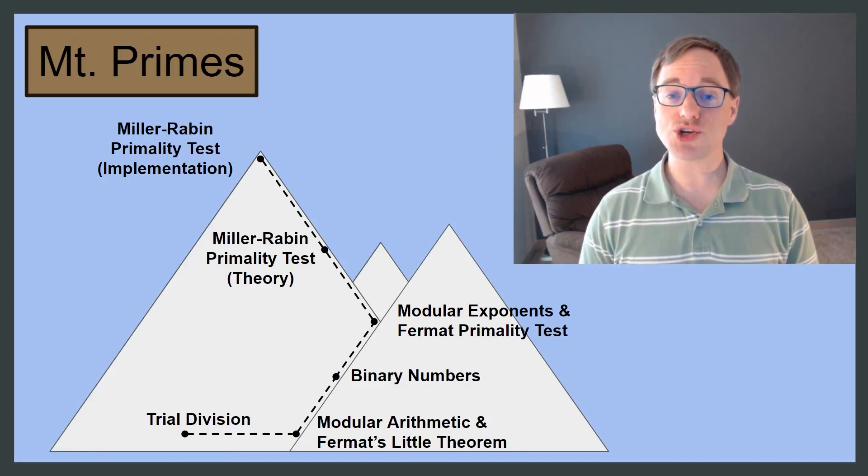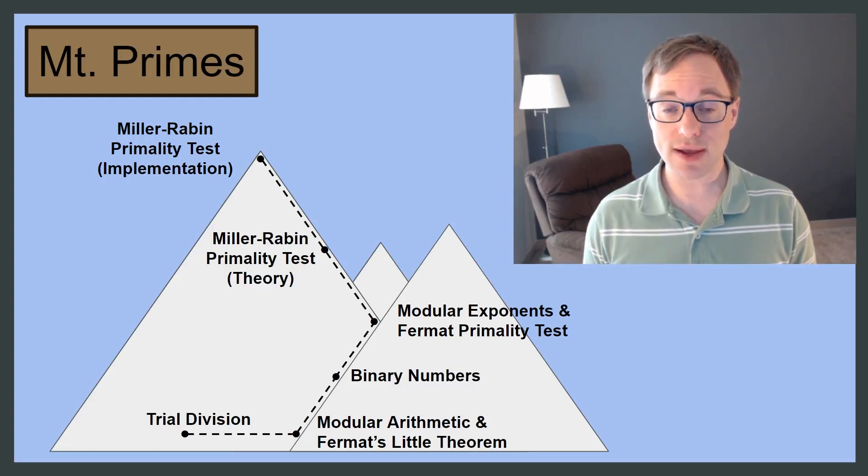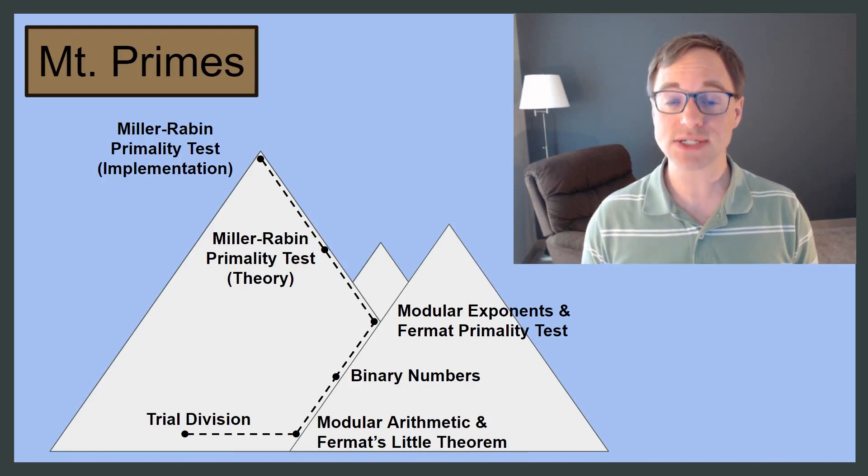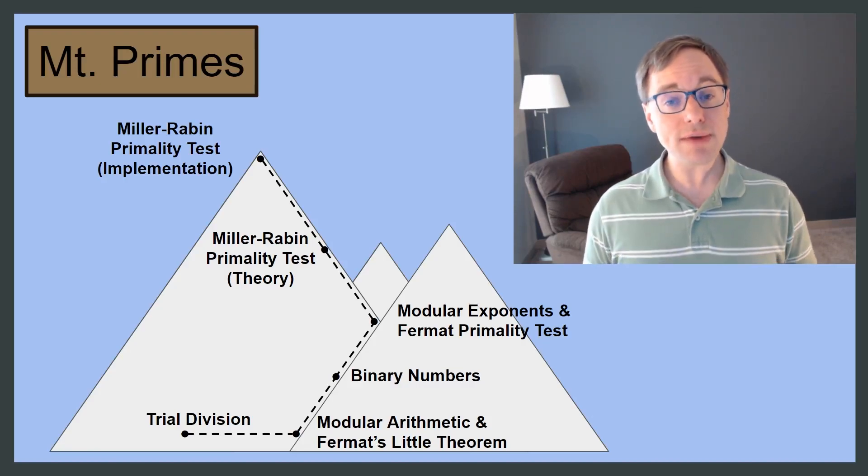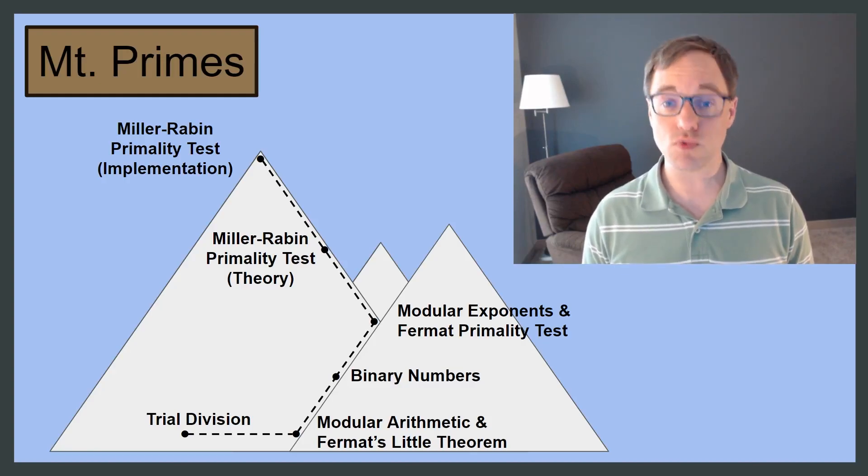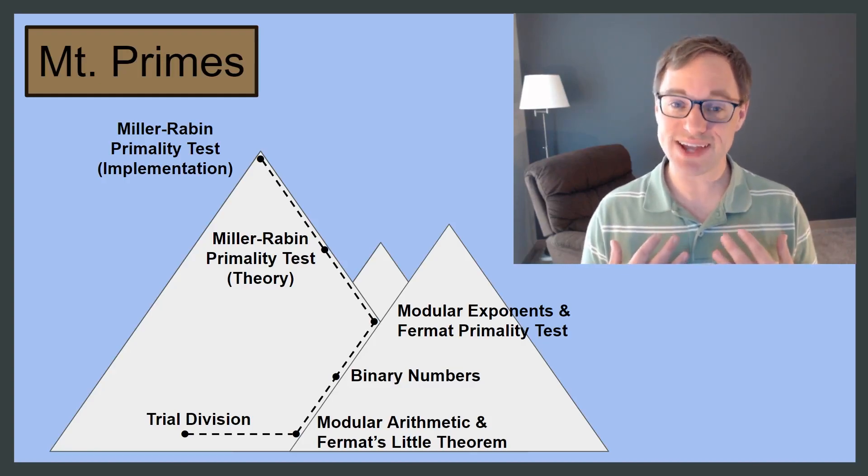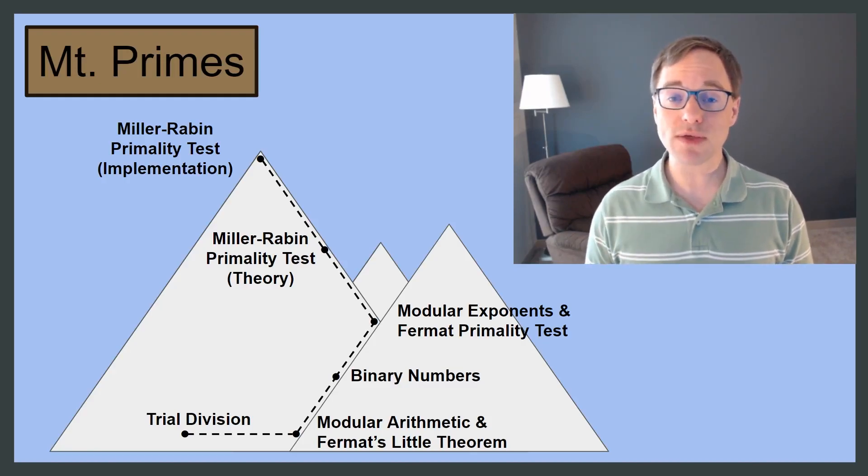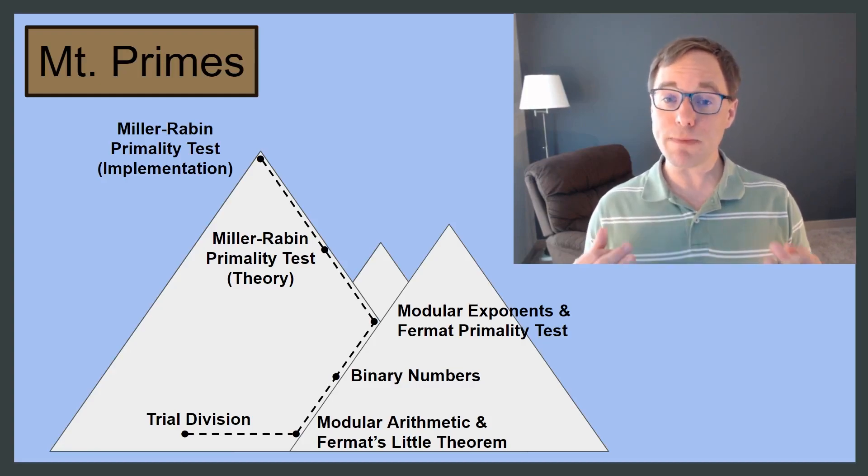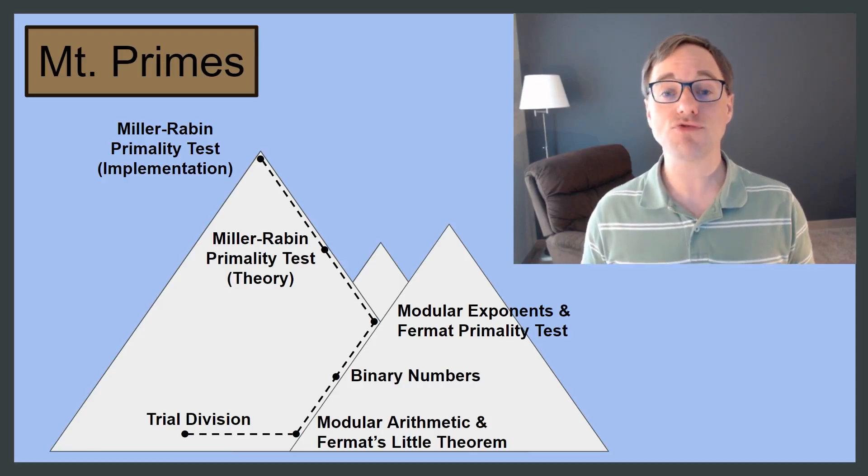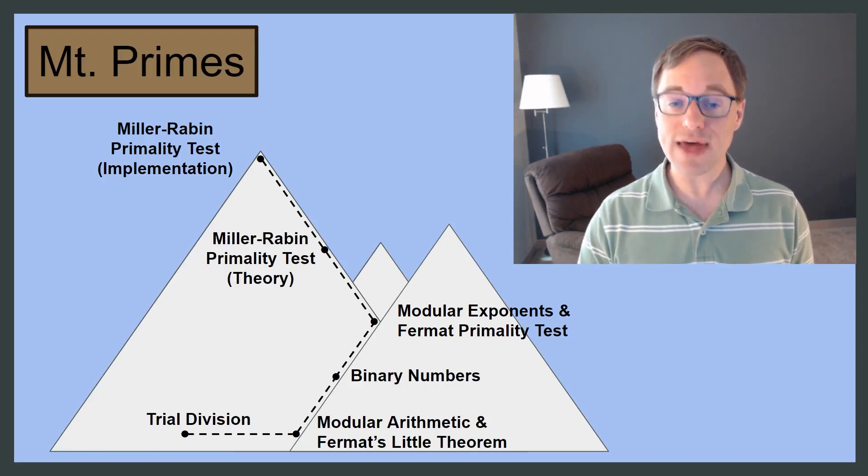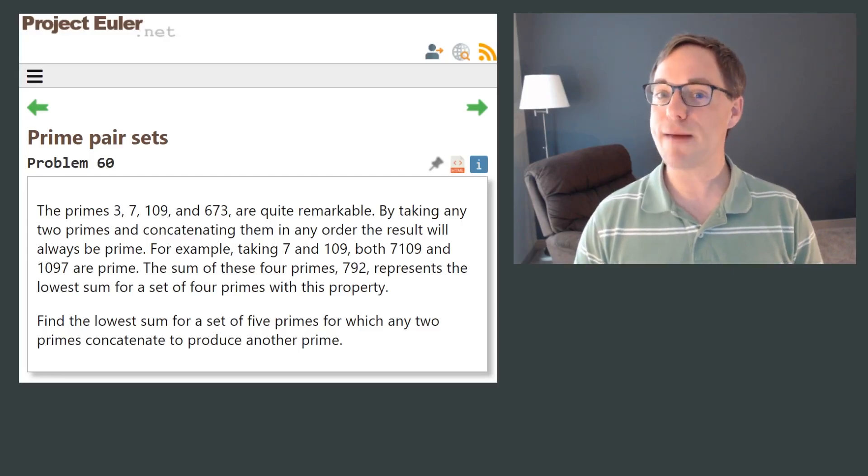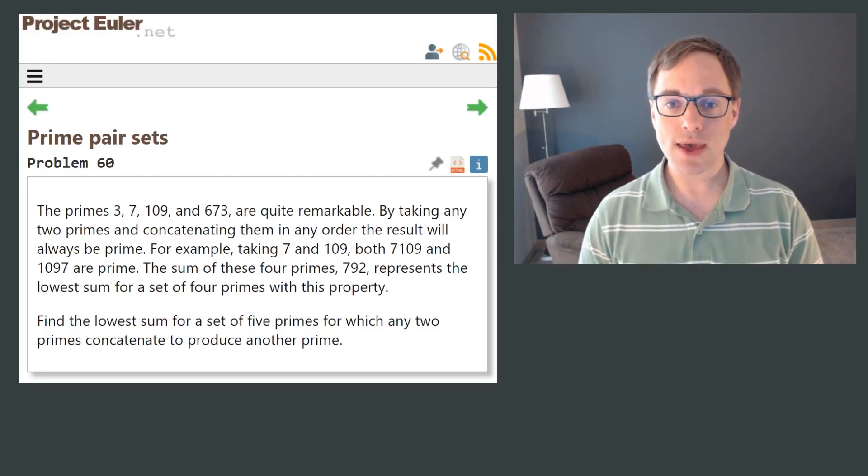But before we get into the technical details, I want to give a bit of motivation for why this question is worth studying in the first place. One of the criticisms often made of topics in pure mathematics, such as number theory, is that while they can be quite beautiful, they have little relevance in the real world. And though I'm perfectly content to appreciate the beauty in such math for its own sake, I think it's worth noting that this is one of the most important subjects, once considered to be purely aesthetic, that was suddenly found to have tremendous practical importance. And that's because it will finally let us finish our solution to problem number 60 from the Project Euler problem archive. I'm kidding, of course. It will let us do that.